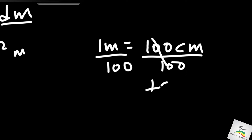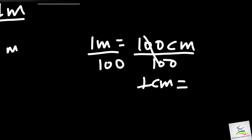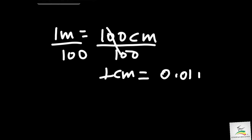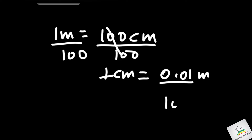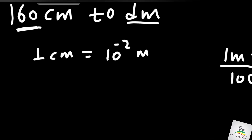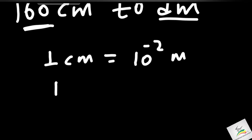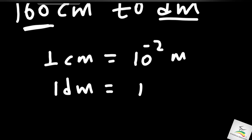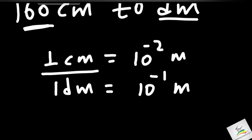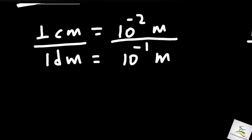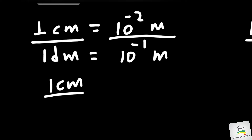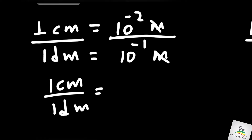One centimeter equals 0.01 meter, which is ten to the power of minus two meters. One decimeter equals ten to the power of minus one meter. So we have the ratio: 1 centimeter over 1 decimeter equals ten to the power of minus two over ten to the power of minus one.